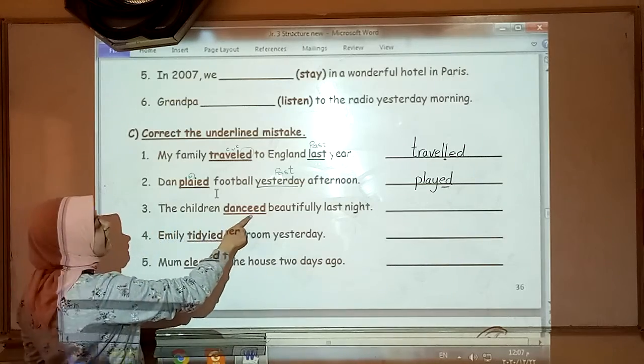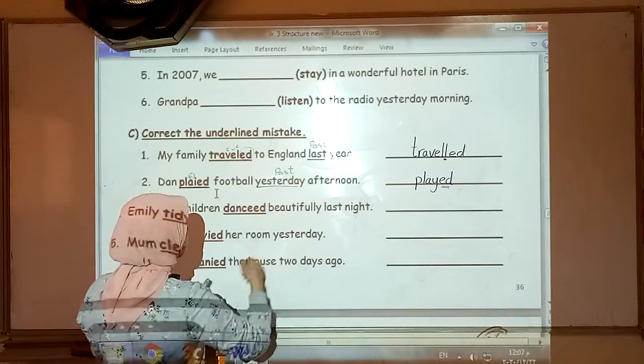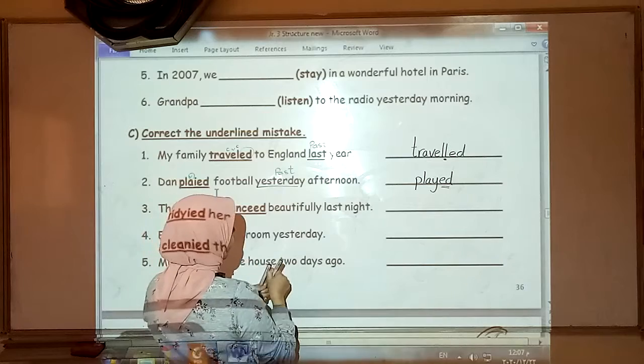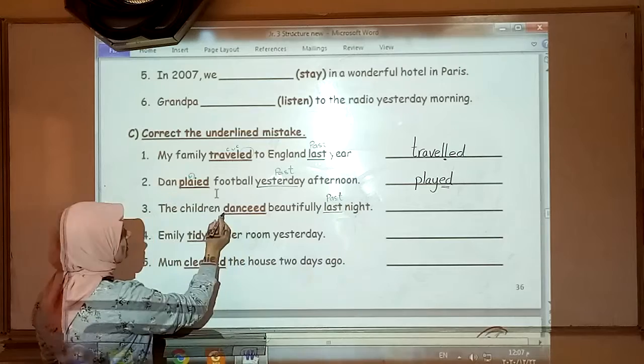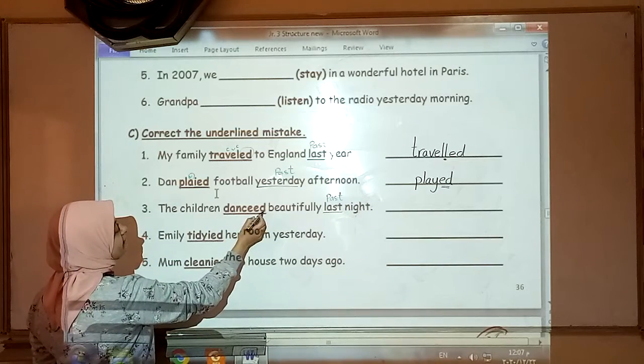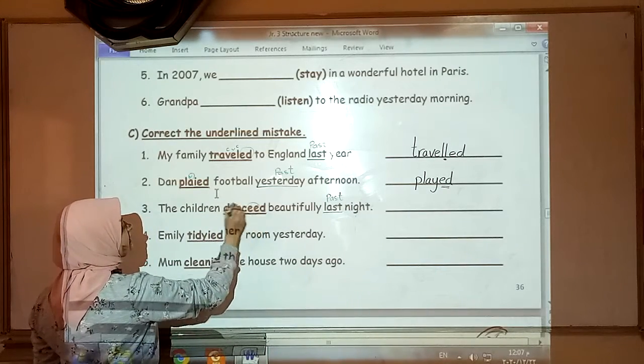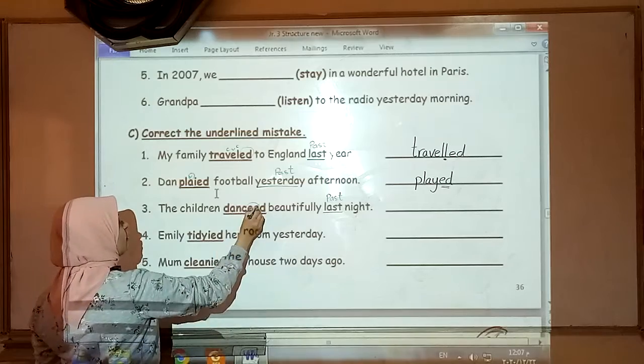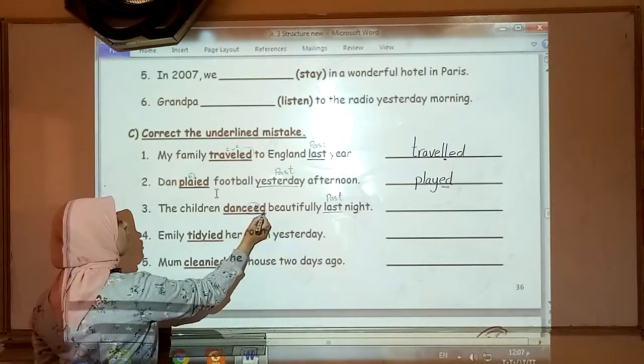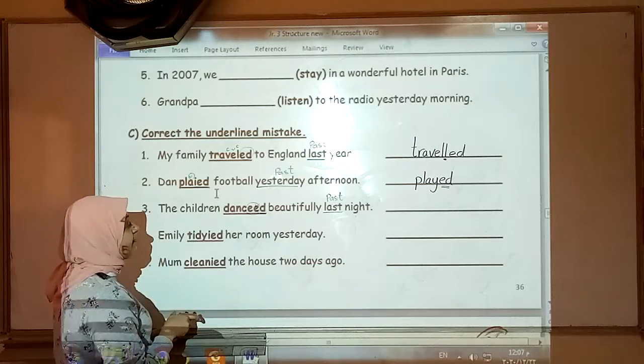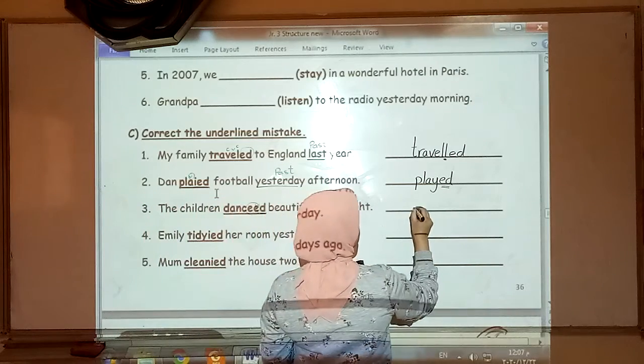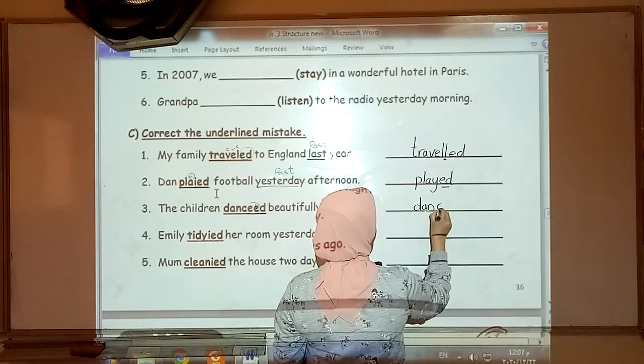The children danced beautifully last night. Keyword, last, past. As you can see, danced. We have double E here which is wrong. One of them should be crossed because we add D only if the verb already ends in E. Danced.